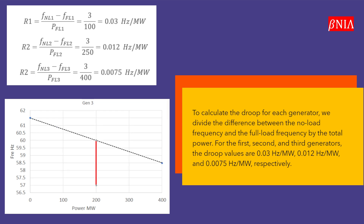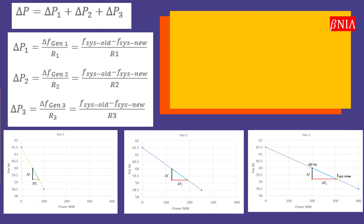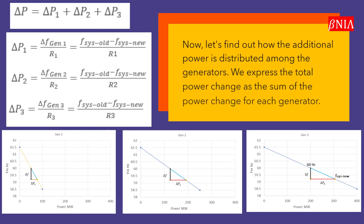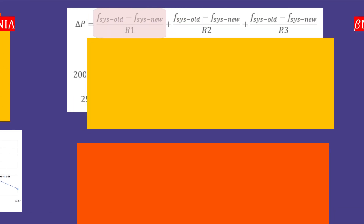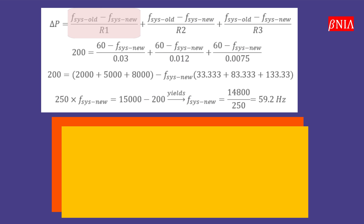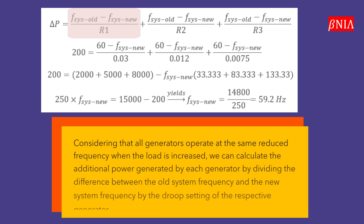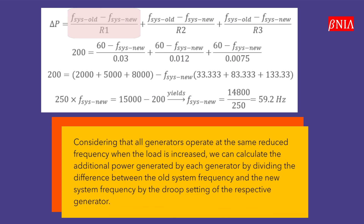Now let's find out how the additional power is distributed among the generators. We express the total power change as the sum of the power change for each generator, considering that all generators operate at the same reduced frequency when the load is increased.